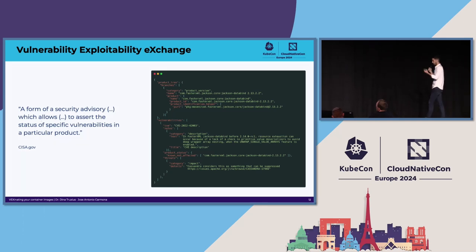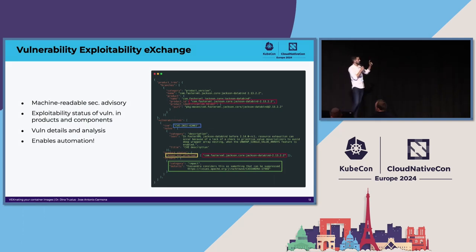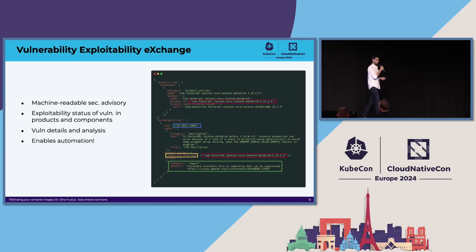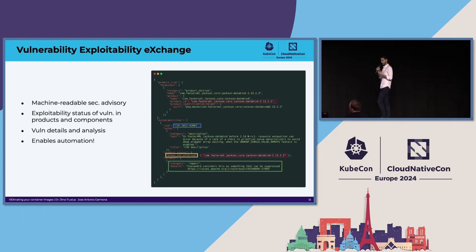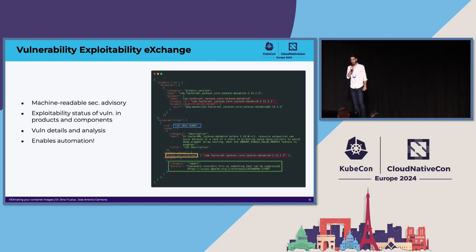In this case, for example, we wanted to say that we were not affected by this. Here is an excerpt of a VEX file following the CSAF format in which we state that. The entries in red make reference to the affected file and affected dependency — in this case, faster.xml. There is also an entry in blue saying the vulnerability we want to suppress. The yellow one is interesting — it is the actual statement saying we know this is known to not be affected. In green, we can have additional comments — for example, Cassandra considers this as something that can be suppressed, with a link to the official ticketing system.